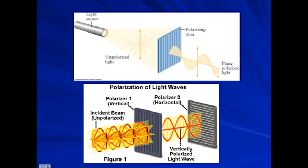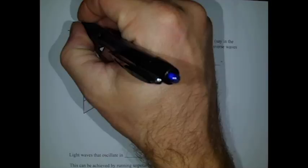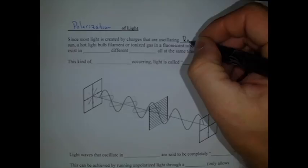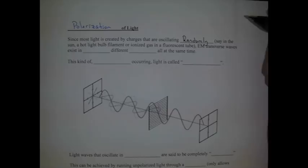So let's fill our notes in for this. The last heading is the polarization of light. Light can be polarized. So I said before, most light is created by charges that are oscillating randomly. So you have a hot piece of metal and some of the charges will be oscillating side to side and some up and down, some left and right. So this could be the sun, a hot light bulb filament, or ionized gas. It's all random.